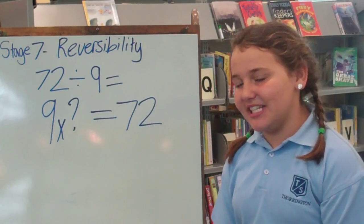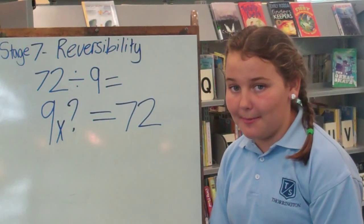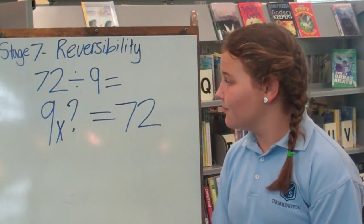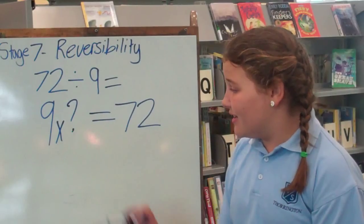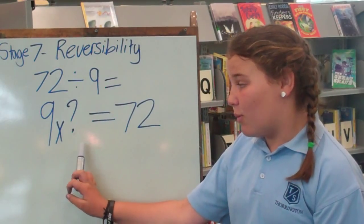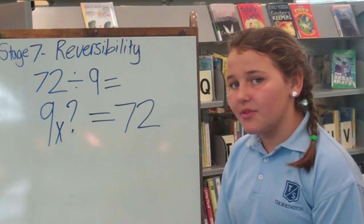Today we're going to use reversibility to figure out what 72 divided by 9 is. We're going to do that by going: 9 times what equals 72?